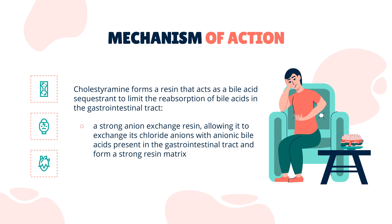Mechanism of Action. Cholestyramine forms a resin that acts as a bile acid sequestrant to limit the reabsorption of bile acids in the gastrointestinal tract. Cholestyramine resin is a strong anion exchange resin, allowing it to exchange its chloride anions with anionic bile acids present in the gastrointestinal tract and form a strong resin matrix. Cholestyramine consists of a functional group — a quaternary ammonium group — attached to an inert styrene-divinylbenzene copolymer in the anion exchange resin.